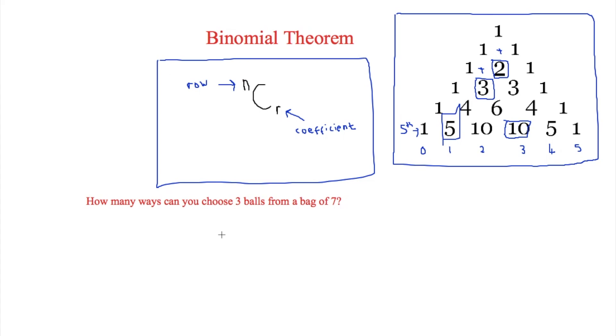Now one way that we can use this solely on its own is in a question such as this one at the bottom and this one says how many ways can you choose three balls from a bag of seven. In order to do this you would write 7C3 on your calculator which is then equal to 35. Therefore there are 35 ways to choose three balls from a bag of seven.